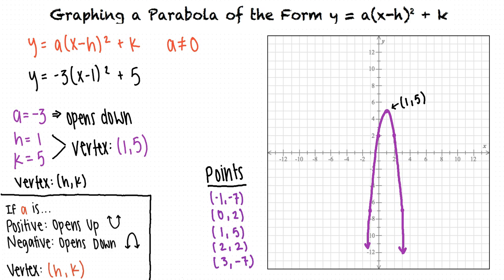So to graph a parabola in the form y equals a times x minus h squared plus k, the sign of a tells us which direction the parabola opens. The vertex of the parabola is given by h comma k. And we have to find two points on either side of the vertex. We can then draw a curve through our points, and we will have our graph.